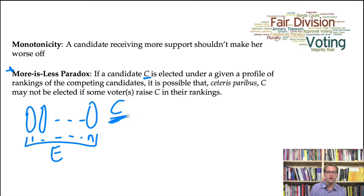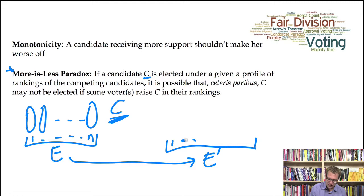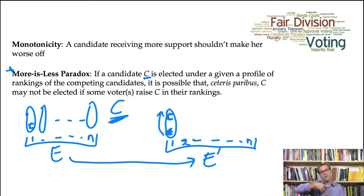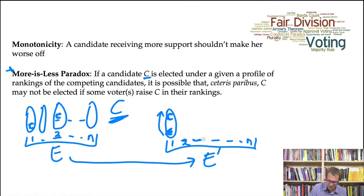The more is less paradox arises when, if we move to a different election scenario E prime with the same set of voters one through N, some voters have changed their rankings just a little bit. The way they change their rankings is they take candidate C and move C up. So rather than being last, for example, voter one now ranks candidate C first. Or voter three ranked candidate C third, but now in the new scenario candidate C moves up to second. Otherwise, all other relative orderings between candidates remain exactly the same.